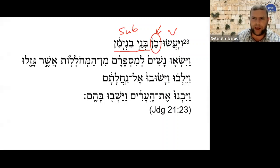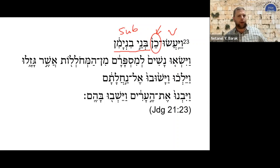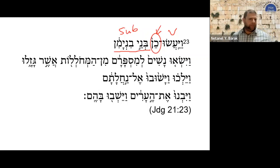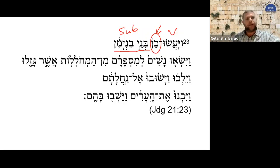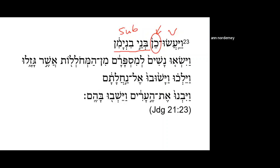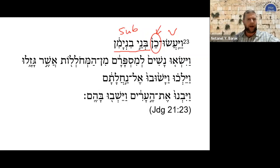As in the previous verses, they find a solution for the problem of the tribe of Benjamin. Because the tribe of Benjamin had a problem after the civil war of the concubine at Giva. The people had sworn they cannot give their daughters to the tribe of Benjamin, and they find a way to solve the problem — to make sure the tribe is not completely destroyed.